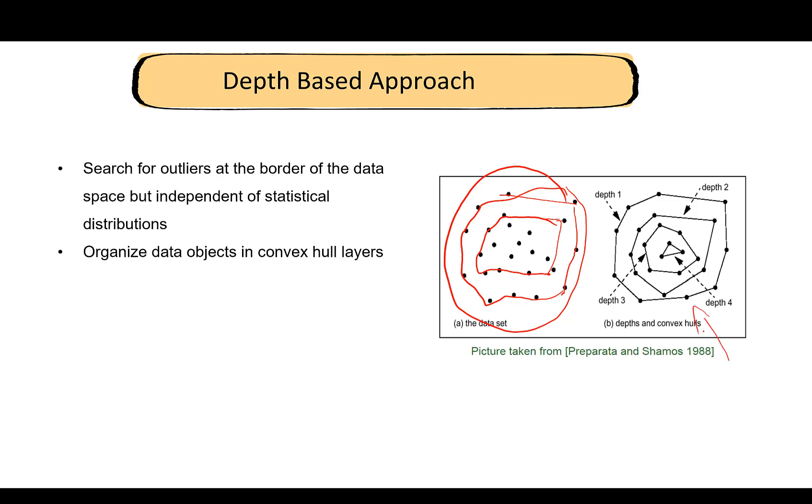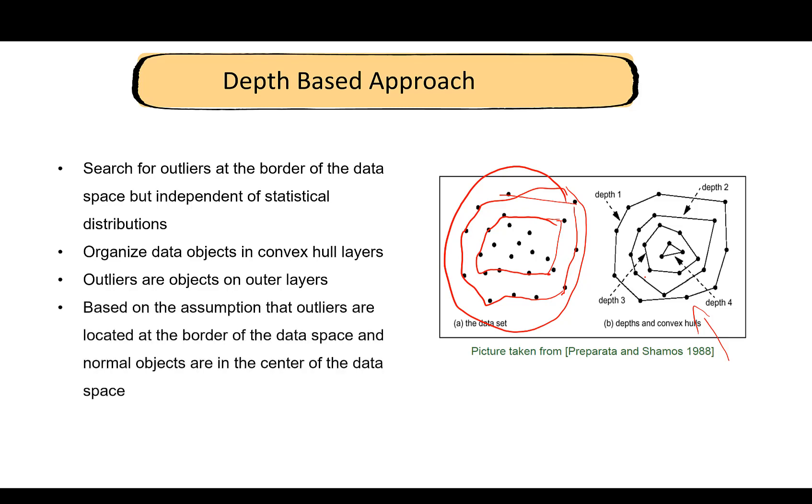This is how the figure will look like. The points on the outermost layer have depth one, on the second layer have depth two, and so on. We can consider objects that are on the outermost layer as outliers. This is based on the assumption that outliers are located at the border of the data space. This assumption may not be true.